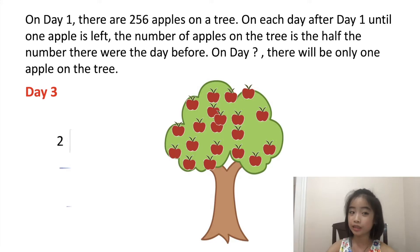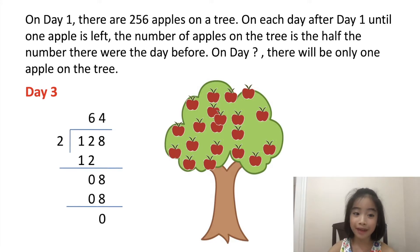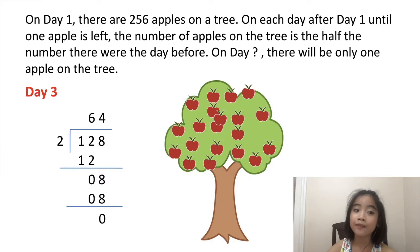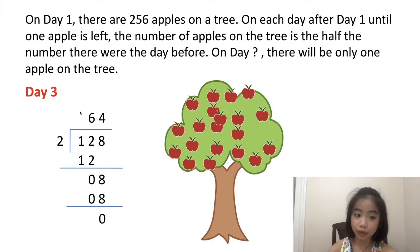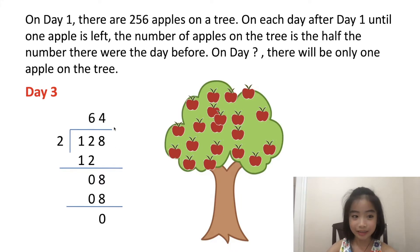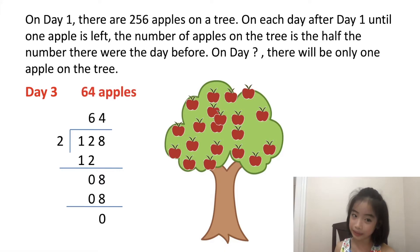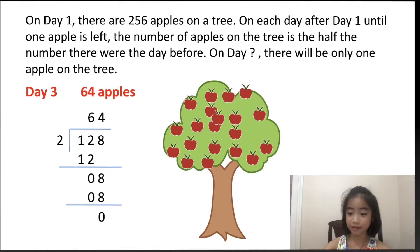The number of apples on day three is half the number of apples on day two. So half of 128 is 64. So on day three, there are 64 apples.